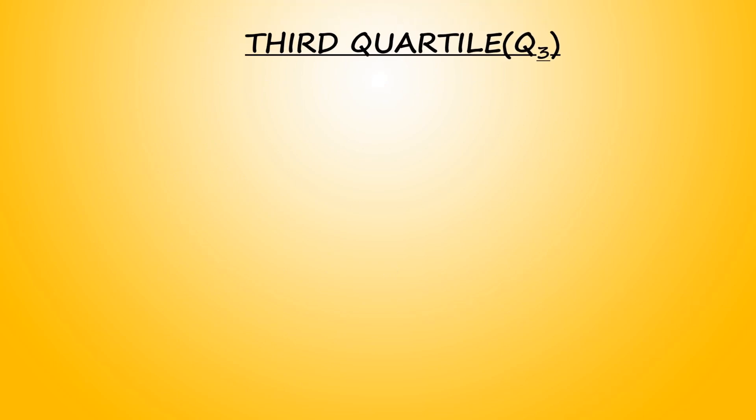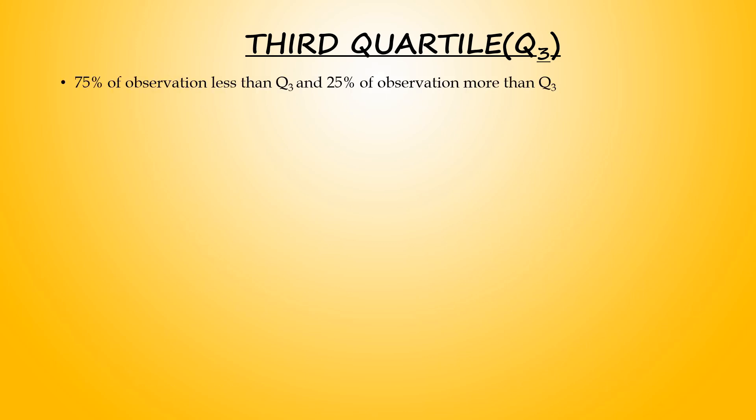Next, we proceed to third quartile, known as upper quartile, Q3. Look at the definition: 75% of observations are less than Q3, and the other 25% is more than Q3.